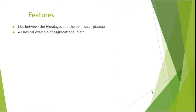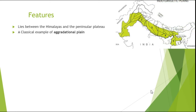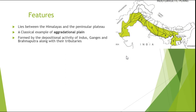It is a classical example of an aggradational plain. Aggradation is the process that refers to the rise in the level of land that occurs due to the deposition of sediment. So, aggradational plain means the plain or land which is formed due to the deposition of sediments. In the case of the North Indian Plain, this sediment deposition is carried out by the three Himalayan river systems: Indus, Ganges, and Brahmaputra, along with their tributaries.